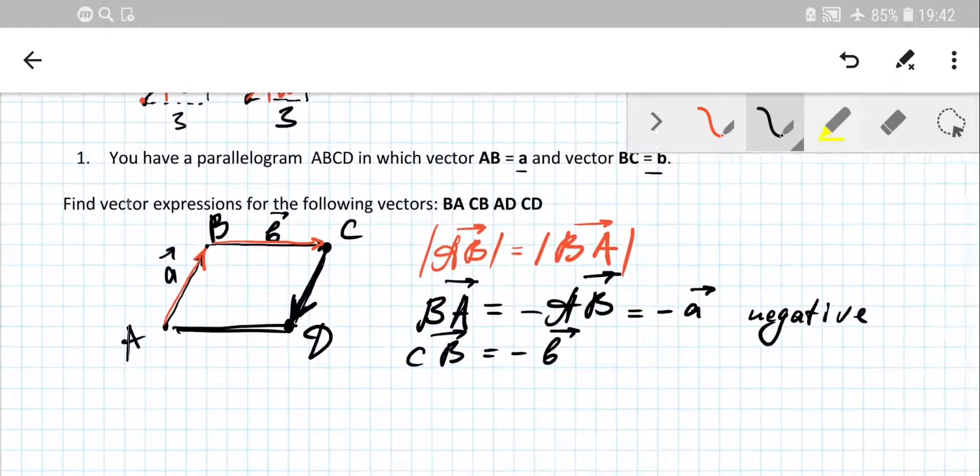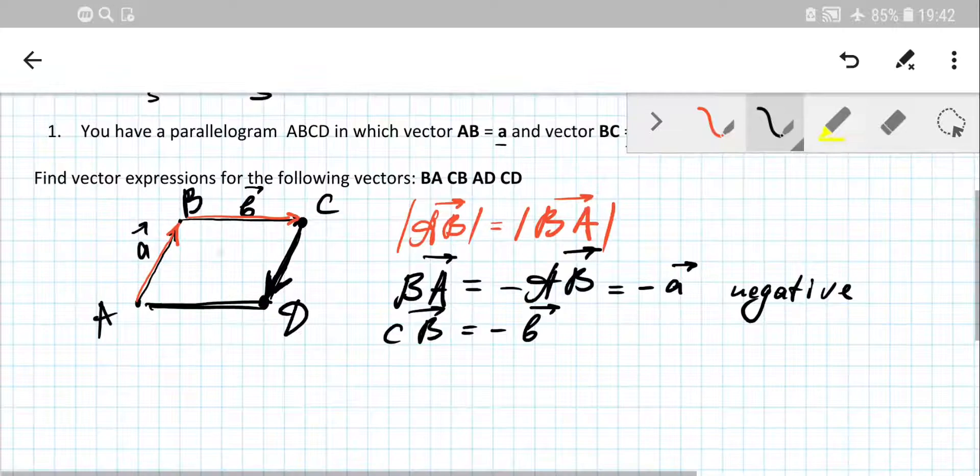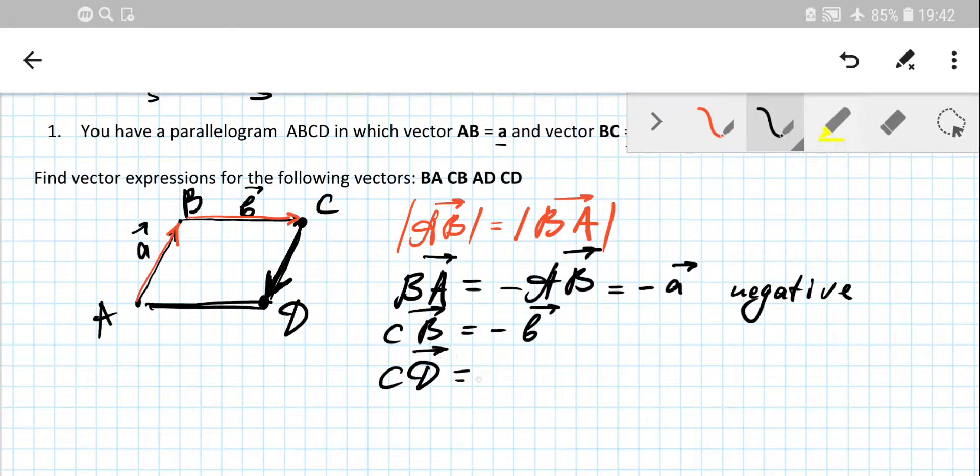So what about direction? Because by definition, the opposite sides of a parallelogram are parallel to each other. So you can state that vector CD is going to be negative A, because technically vector CD is the same as vector BA. They have the same direction and the same magnitude.